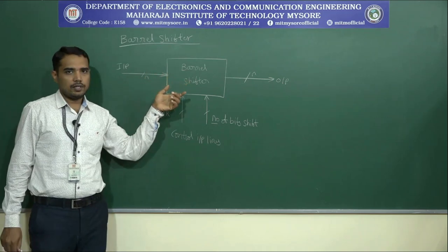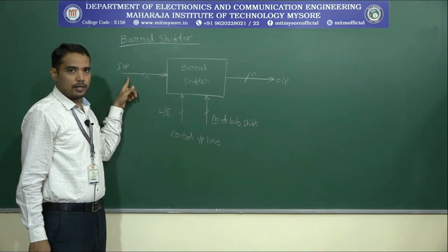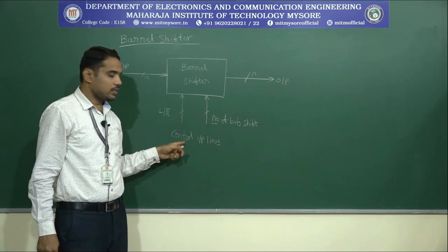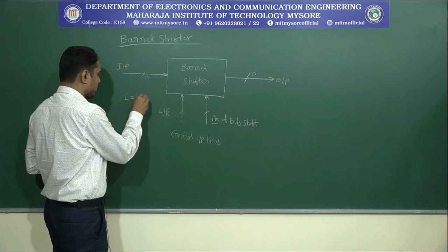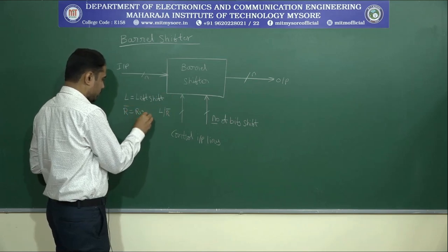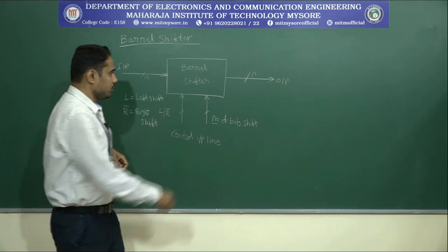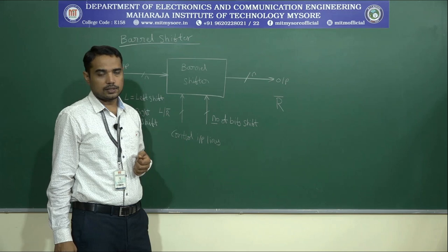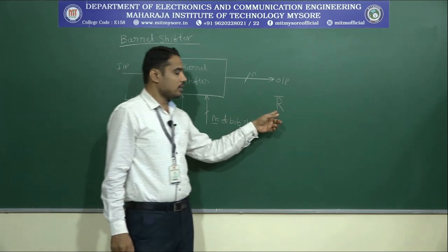This is the generalized block diagram of a barrel shifter that consists of input and output along with two control input lines. We can have an n-bit input line to the barrel shifter and we get an n-bit output. The control input lines are L/R̄. L refers to left shift and R̄ refers to right shift. The reason to indicate R as R̄ is that when we perform a right shift, the sign of the data will be lost. In order to retain the sign of the data, we use R̄.